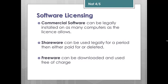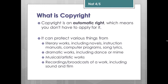Regarding software licensing, there are three main types. Commercial software: you buy a set number of licences and can install it on that many machines. Shareware: you can use it for a demo or trial period, then either pay for it or delete it. Freeware or open source software: you can download and use it free of charge. Copyright is an automatic right that can protect pretty much anything — from literary works such as books, to programs, songs and films — hence why they're protected under the Copyright Designs and Patents Act.